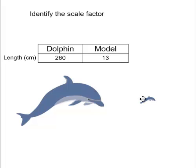So if our dolphin is 13 centimeters long, and the real-life one is 260, you're going to write this kind of proportion here, just like you've done before with proportions. So for every 13, you have 260 centimeters long.